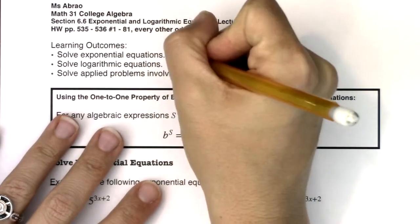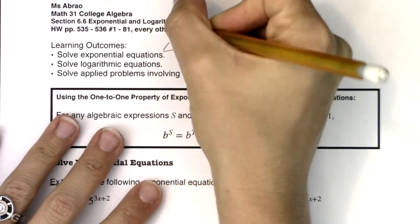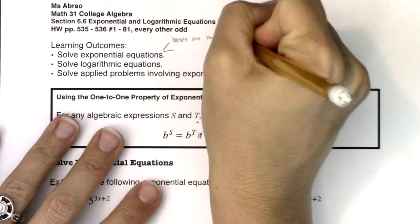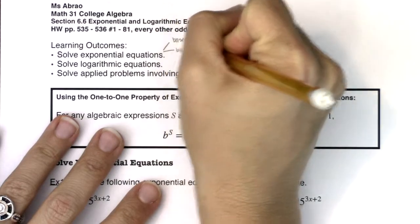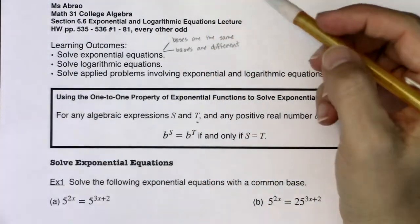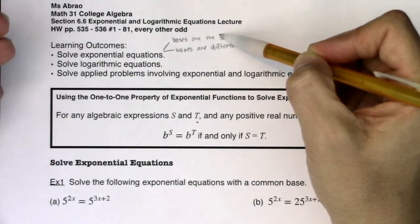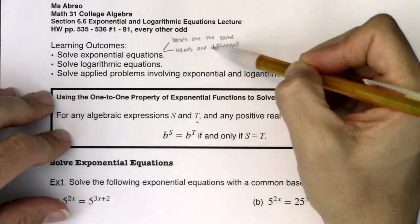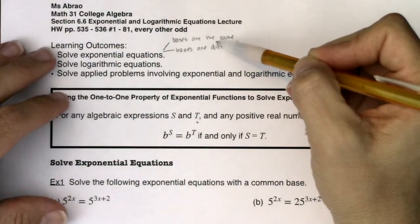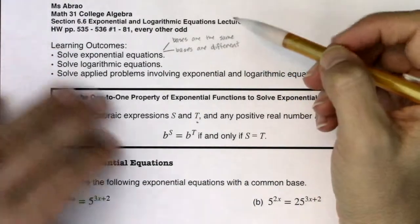When we talk about solving exponential equations, there are going to be two main types of problems. We're going to solve exponential equations when the bases are the same and when the bases are different. There are two types of exponential equations: one where the base on the left is equal to the base on the right, and there's a certain technique for how to solve it. And then there's the more common type where the bases on the left and right side aren't equal, and we use a different technique.